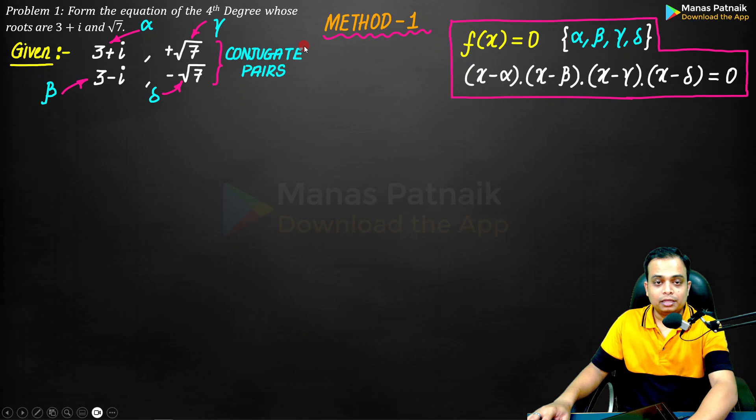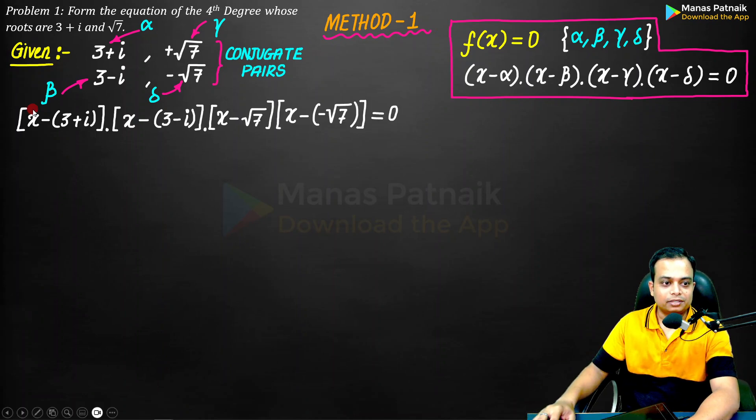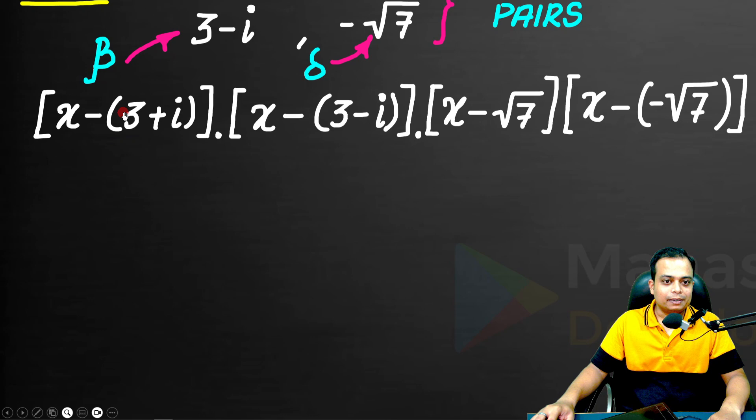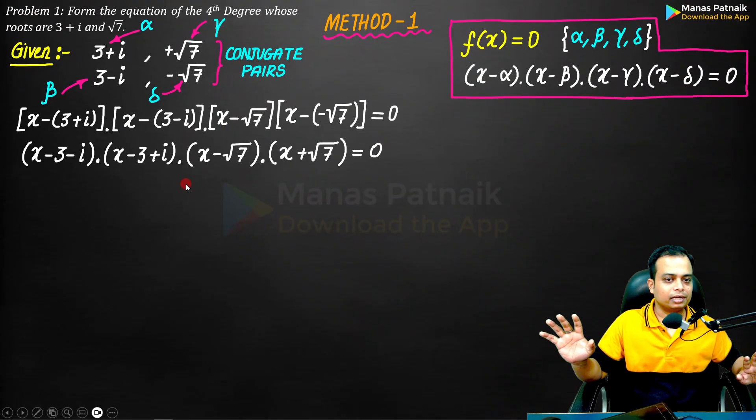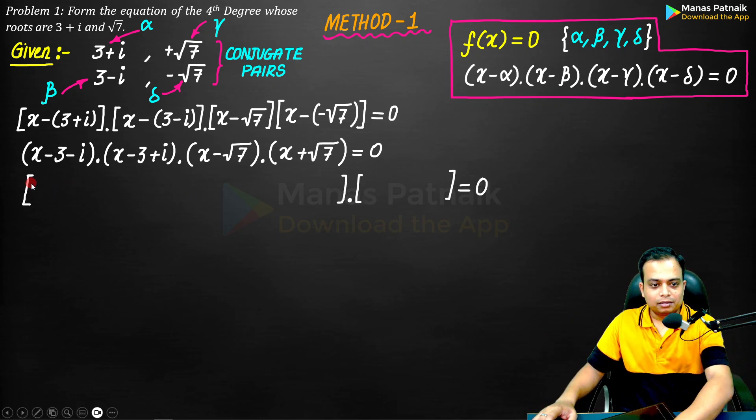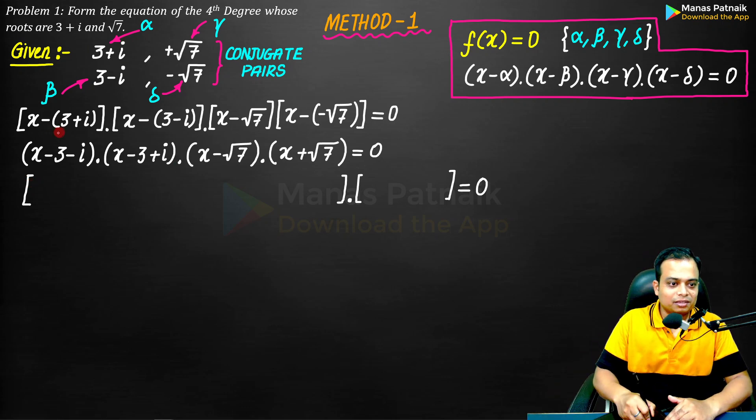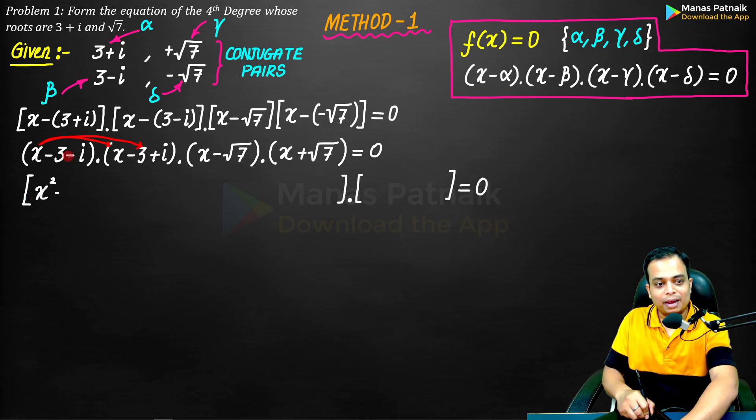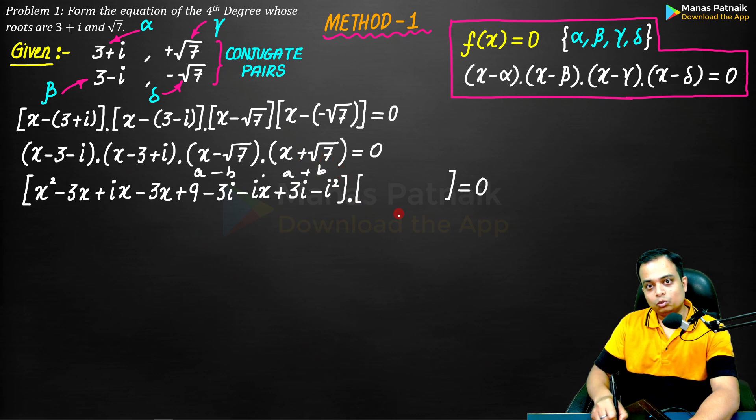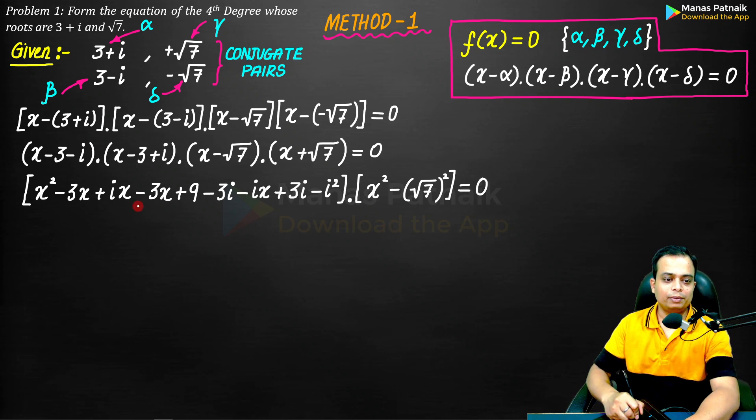This is x minus alpha, x minus beta. Now students, what you can do is you can take this negative sign inside. Let me do this very quickly. This is very simple now. What we'll do is x into x is x square, and then x into minus 3 is minus 3x. In the same fashion you have to expand this entire term. This looks like a minus b multiplied by a plus b, so this is going to be a square minus b square. A is x and b is root 7.